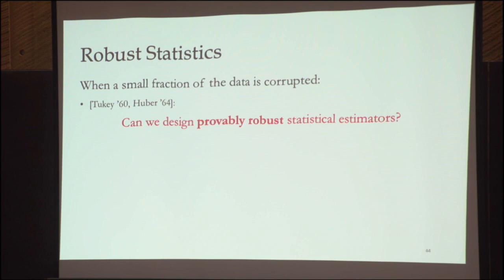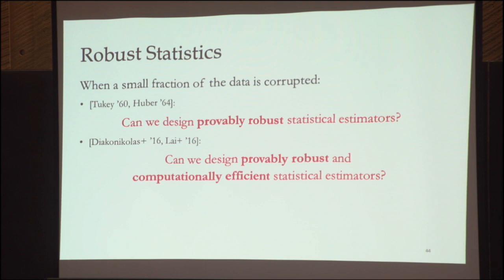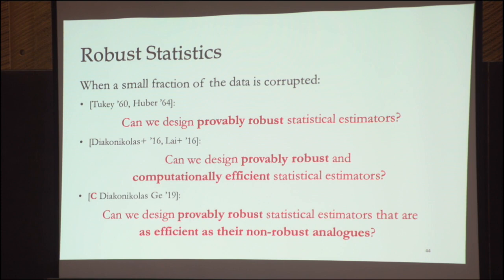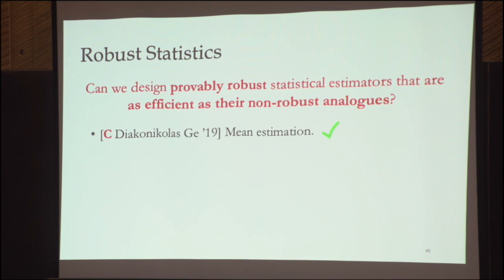Zooming out: the conceptual contribution is as follows. In the 1960s, people examined robust estimation without caring about computational complexity. Three years ago, the TCS community provided polynomial-time algorithms. Our work asks: can you match the best running time of non-robust estimators? We showed you can for robust mean estimation, and a later paper showed the same for computing the empirical covariance matrix robustly.